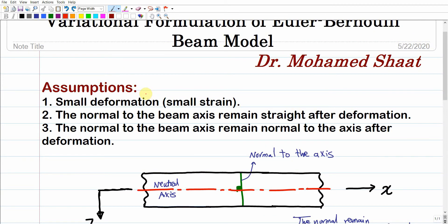We will first discuss the main assumptions behind the Euler-Bernoulli beam theory. The first assumption is small deformation, which means small strain. This means the kinematic variable describing deformation is the infinitesimal strain tensor, epsilon_ij, the same strain tensor used in linear elasticity. Additionally, the beam is made of linear elastic material, so there is no non-linearity — neither geometric nor material.